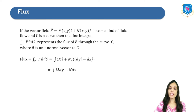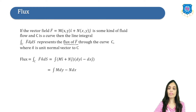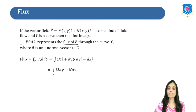If the vector field F is given by Mi cap plus Nj cap, which is some kind of fluid flow, and C is a curve, then the line integral over C of F dot n-cap ds represents the flux of F over C, where n-cap is called the unit normal vector to C. So the formula of flux is equal to the line integral over C of M dy minus N dx.